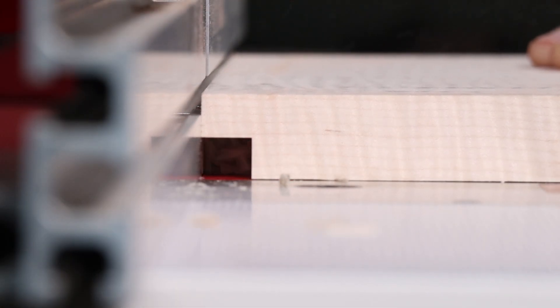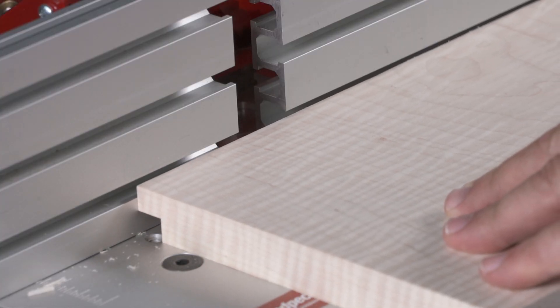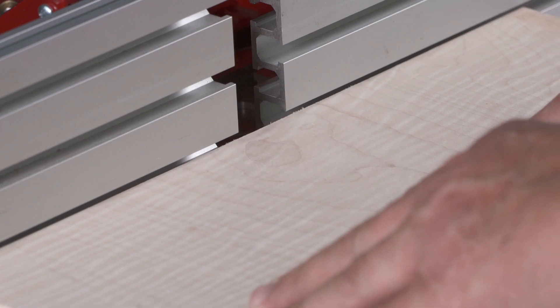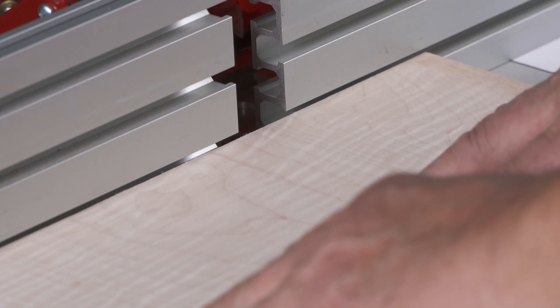The half-inch 3-flute slow spirals handle dados, rabbets, and grooves in difficult domestic hardwoods like quilted maple without burning or chipping.